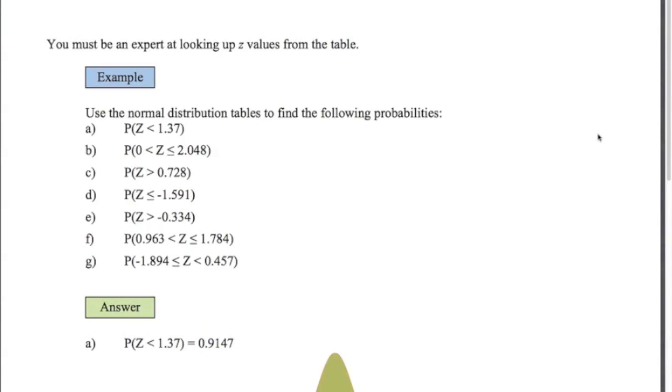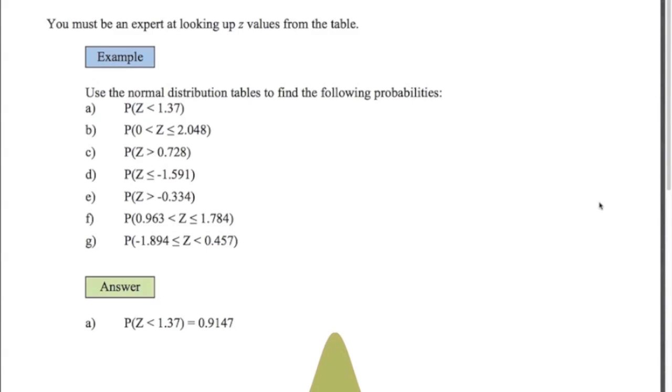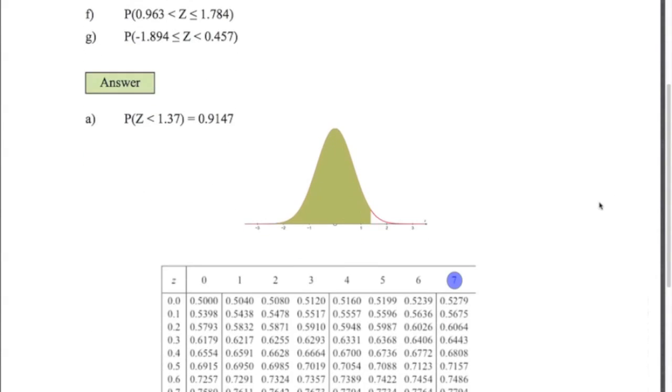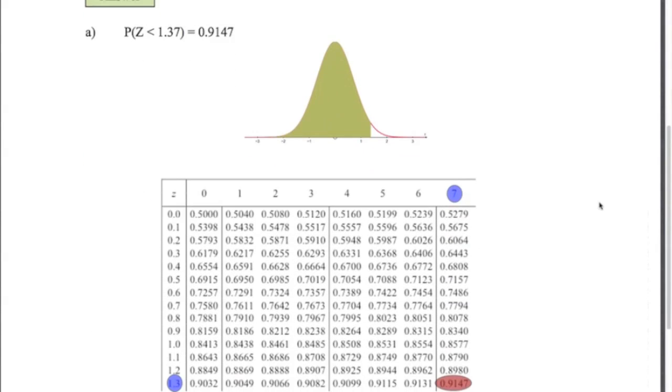A really important skill that you've got to have here is to know how to use the table to look at probabilities given a particular Z value. So I'm going to go through a number of different examples here. Start off with 1.37. So from the table 1.3, the second decimal place 7, 0.9147. Pretty easy.